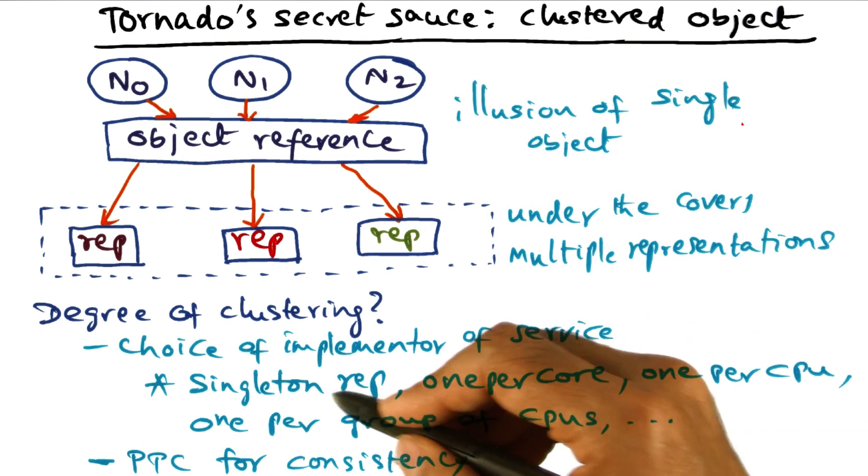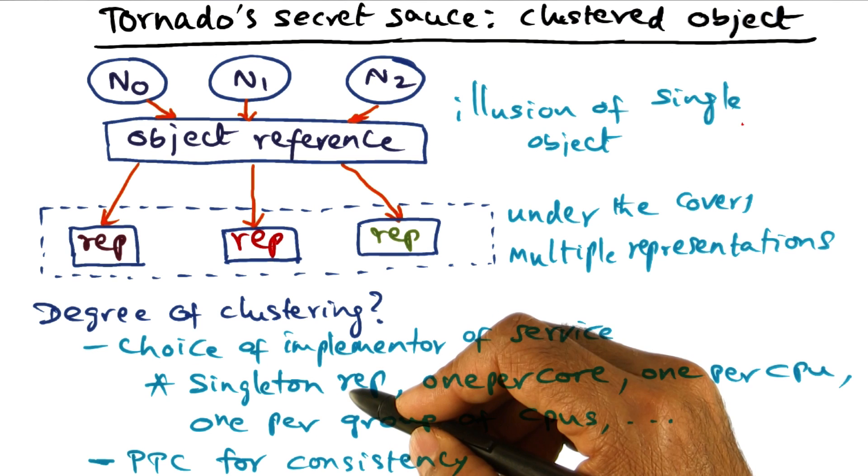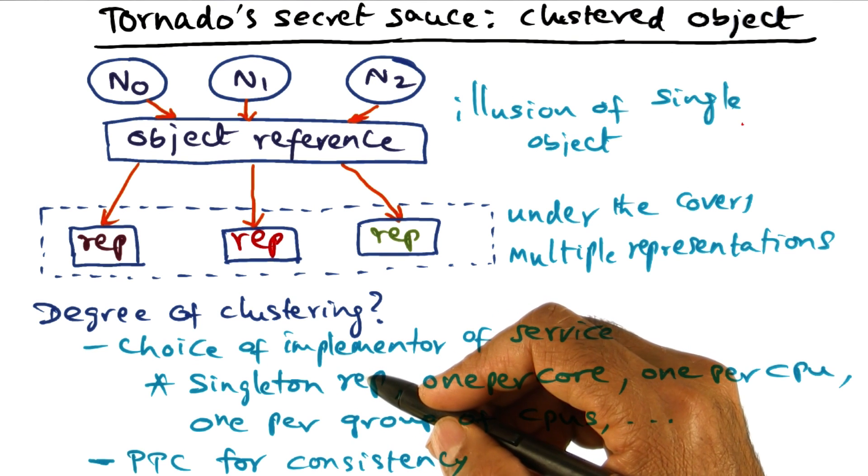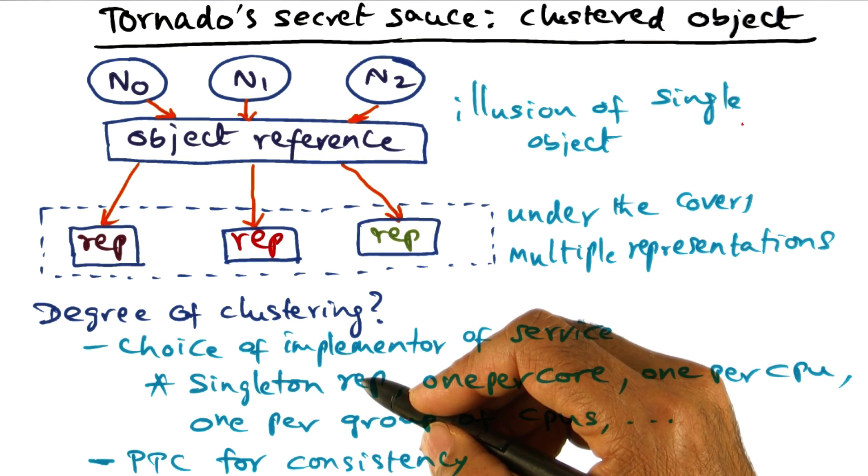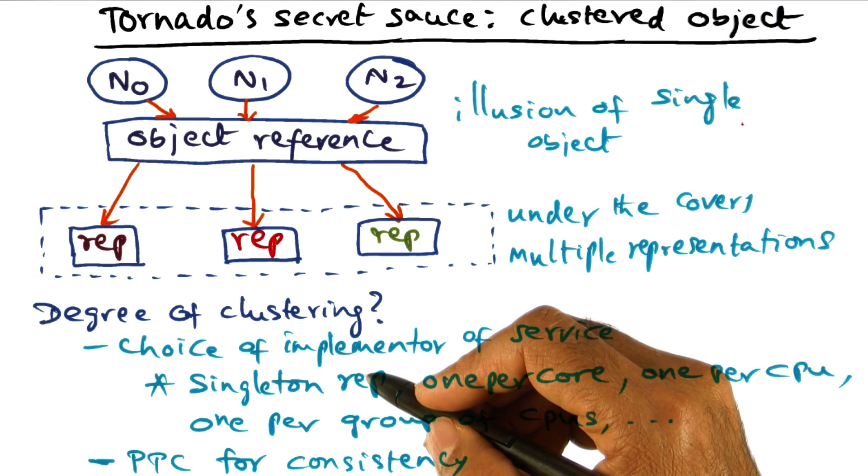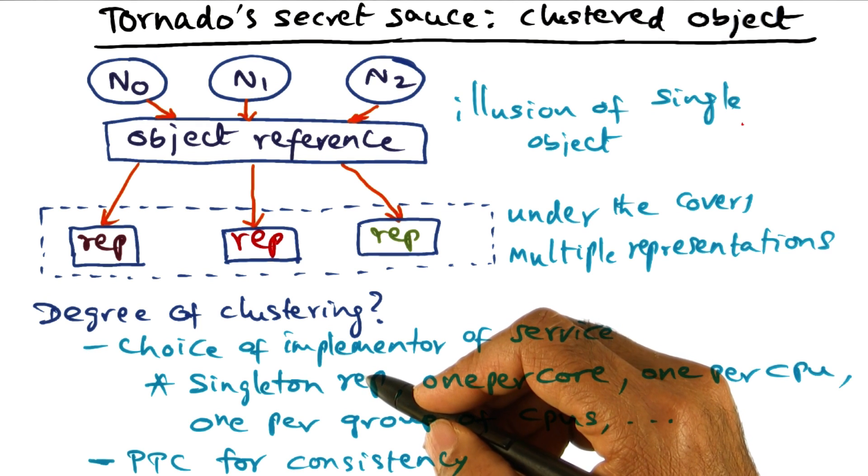But of course, when in doubt, use a single representation. And that way, you have the hardware cache coherence as a security blanket when you're not sure yet about the level of clustering that you want in order to reduce the amount of contention for shared data structures.